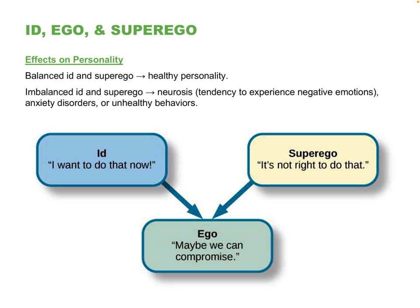A healthy personality is where the id and the superego are managed by the ego in a healthy way — you have urges but the ego has them under control, and you have a strong sense of morality. If there's some sort of imbalance between these three components, Freud would argue you'll end up with what's called neurosis — negative emotions, anxiety, unhealthy compulsive or addictive behaviors — usually because the id is out of control or you're overwhelmed by guilt from an overdeveloped superego.